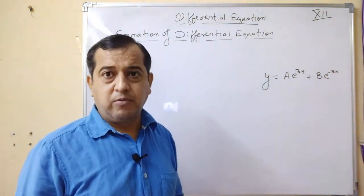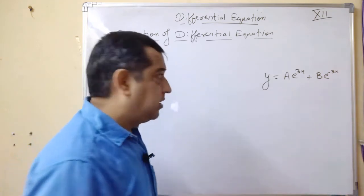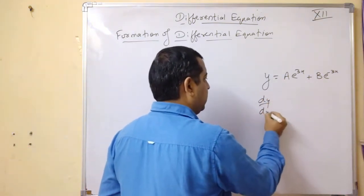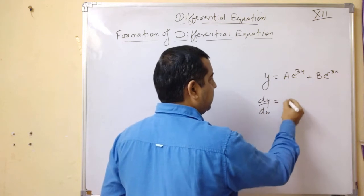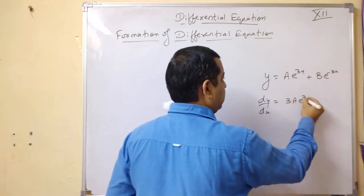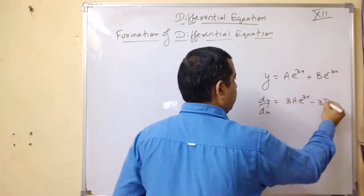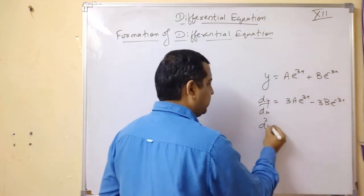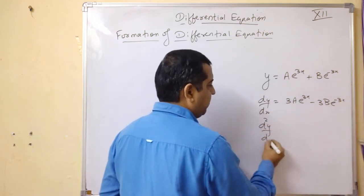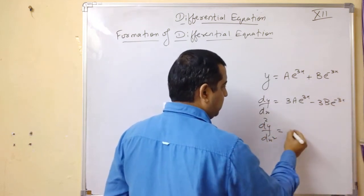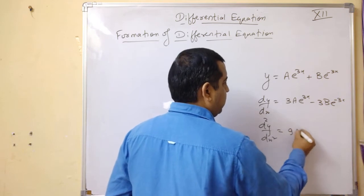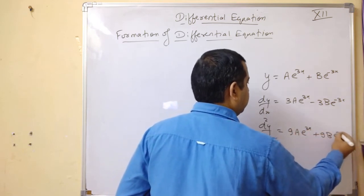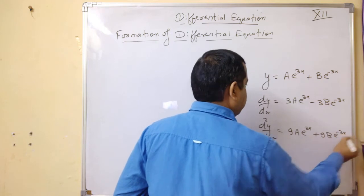Now if you have to form the differential equation, simply differentiate it. dy/dx will be 3ae^(3x) − 3be^(−3x). Differentiating a second time, you get d²y/dx².